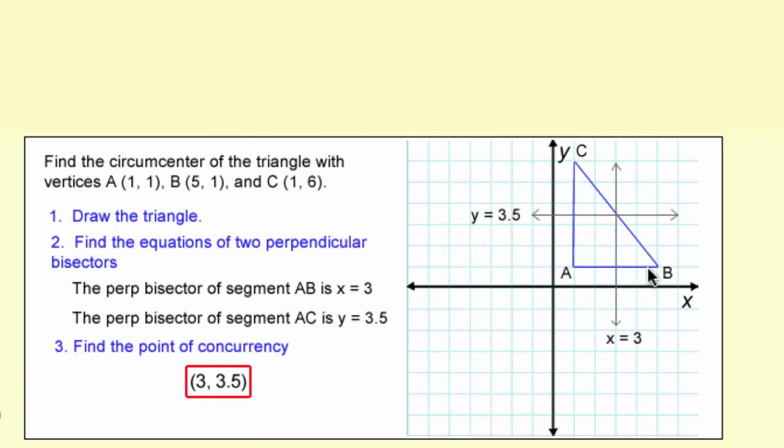And look, this is a right triangle. With a right triangle, the circumcenter is always on the hypotenuse somewhere. So you can be confident that since this is on the hypotenuse, that's the correct point of concurrency, and you can circumscribe a circle from that point that intersects all three vertices.